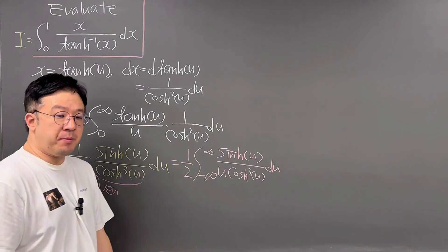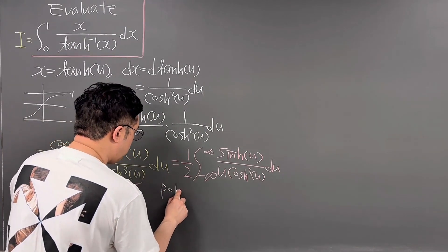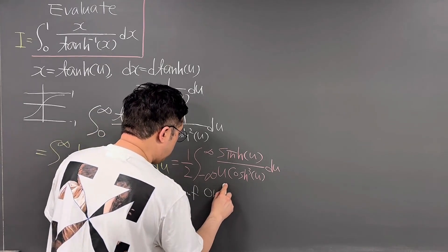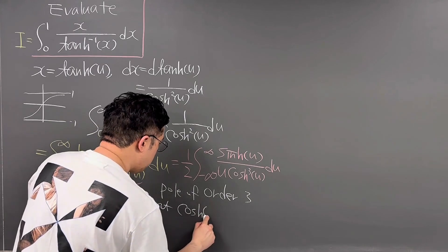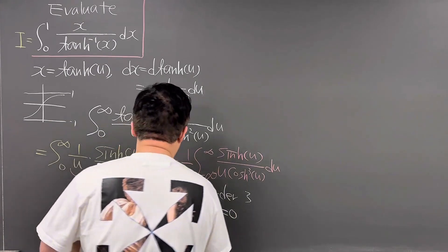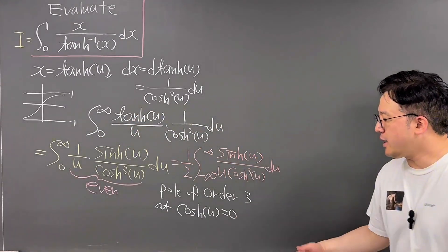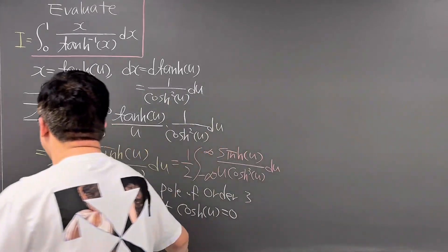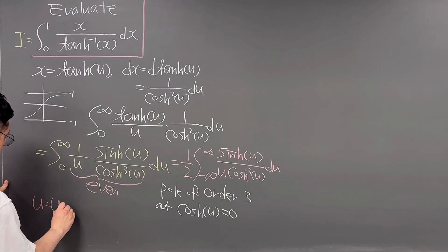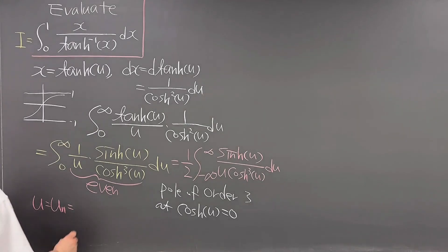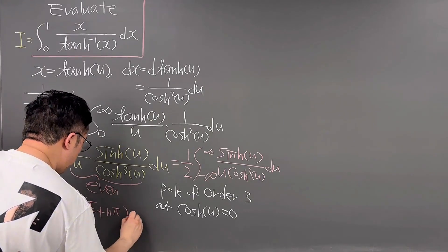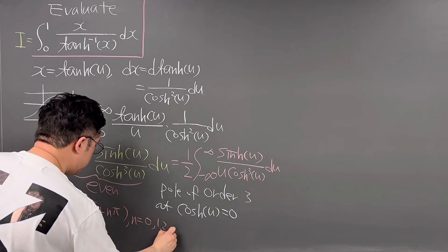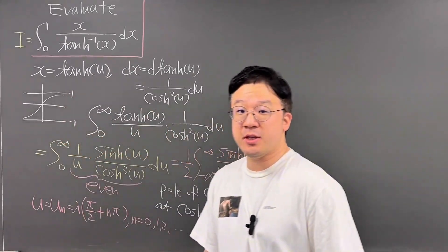Then we need to talk about the pole of order 3 at cosh(u) = 0. So that is why we can identify u_n, which is represented as u_n = i(π/2 + nπ), where n = 0, 1, 2, ... and also -1, because we'll be using Residue's theorem.